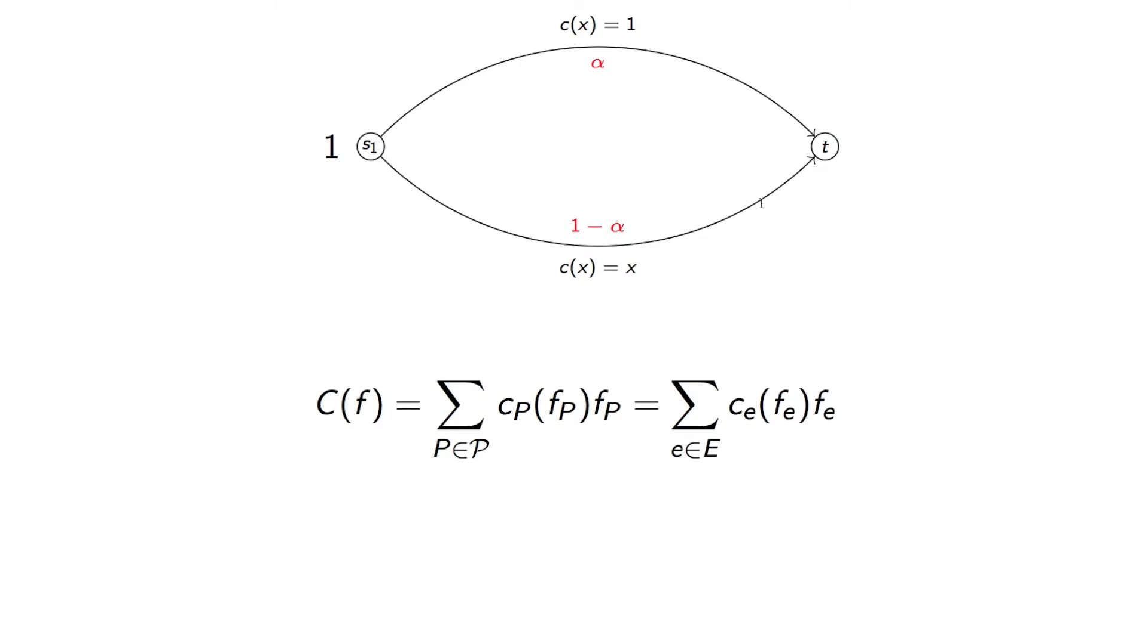Now what we do is we write down the cost function. This is basically equivalent to an average cost across edges, because what we have here is the cost based on the quantity of traffic that goes across edge E multiplied by the quantity of traffic that goes across edge E.